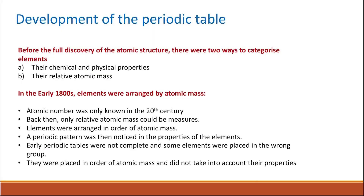The atomic structure was fully discovered in the 20th century. Before the full discovery of the atomic structure, there were two ways to categorize elements: either based on their chemical and physical properties, or based on their atomic mass, because the atomic mass was discovered earlier. So in the early 19th century, elements were arranged based on their atomic mass, as the atomic number was not yet discovered.